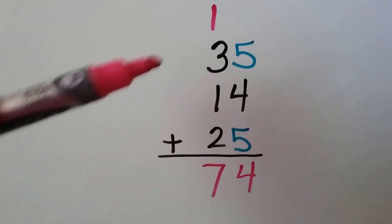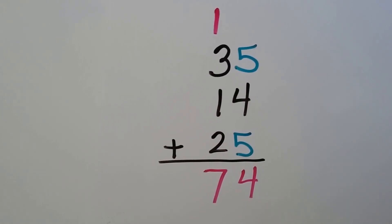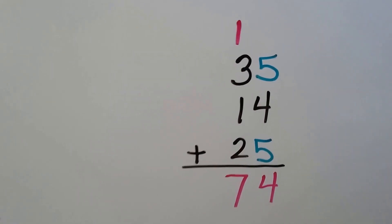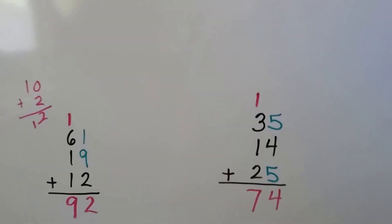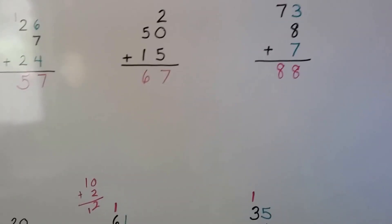So keep your eyes open for friendly numbers, like 5 and 5, or 7 and 3, or 8 and 2, or 6 and 4, so that you can just make a 10 real fast. Okay?